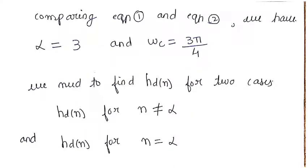Comparing equation 1 and equation 2, we get value of alpha as 3 and value of cutoff frequency omega c as 3 pi by 4.